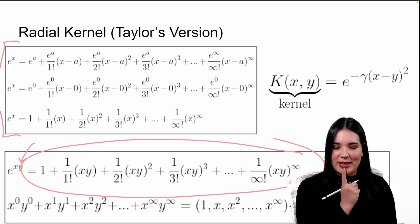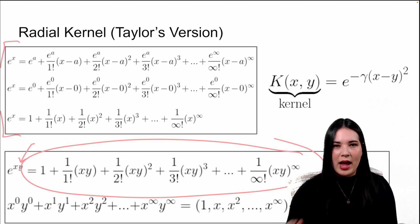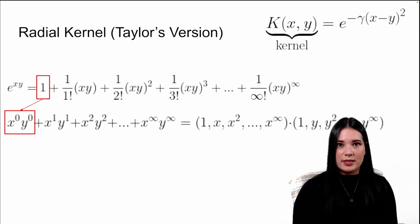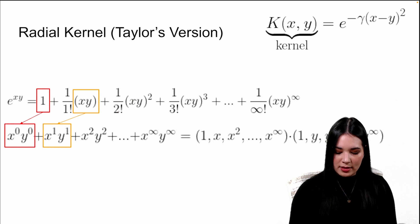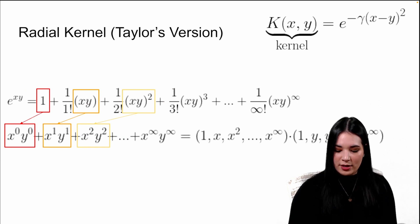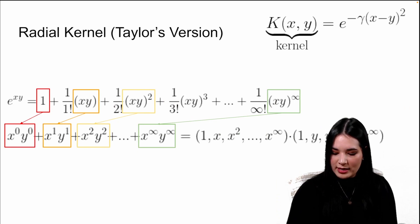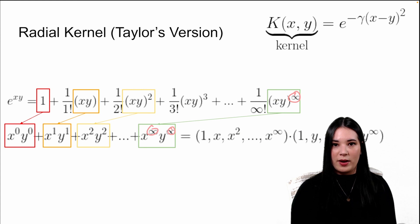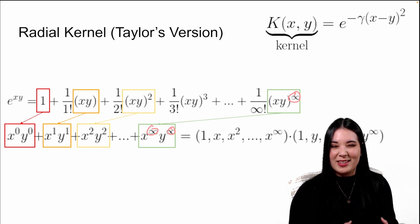Something interesting is happening here. I pasted our sum of infinite polynomial kernels below, and let's compare these two. I see something really similar: anything to the power of zero is one, so here I see some matching terms. Similarly here I see x to the power of one and y to the power of one, which I also see here. Similarly here I see squared values, and here I see squared values. And continuing on, here I see infinite powers and here I see infinite powers. So with some extra math, you can basically see how the radial kernel is projecting data into an infinite number of dimensions.